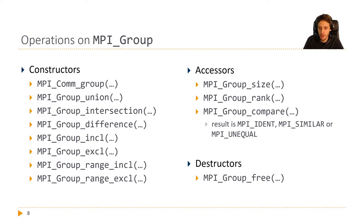For MPI_Group, because they hold a set of ranks, we can do all sorts of set operations on them. We can create them, create the union of two groups, the intersection, or the difference. We can include and exclude specific ranks or a specific range of ranks. With all these functions we can construct a group that really matches the set of ranks we want for later use in collective communication.